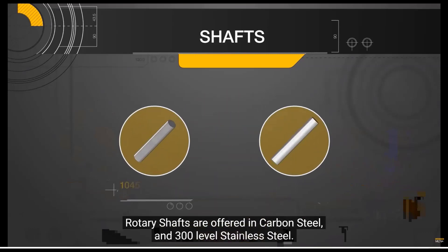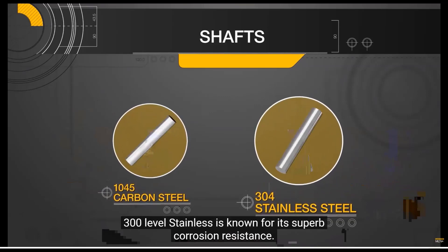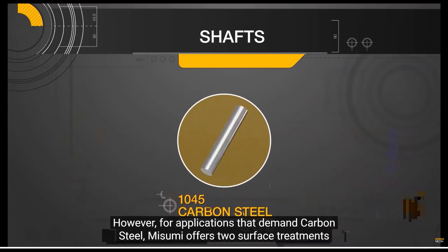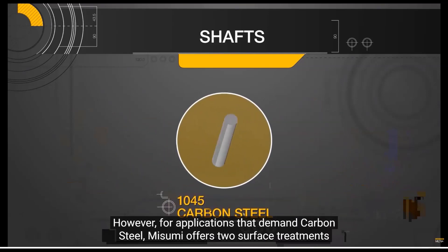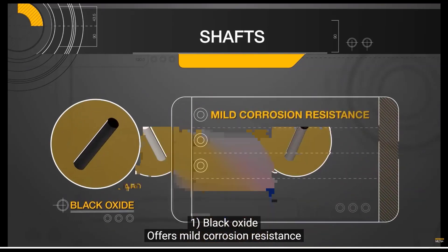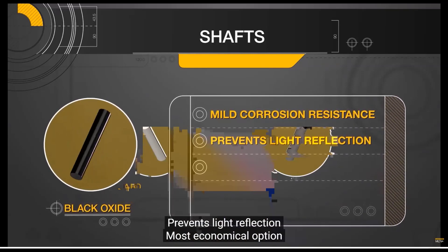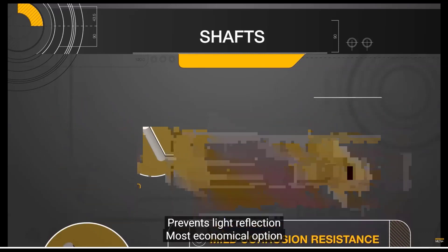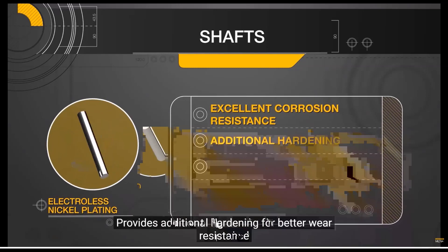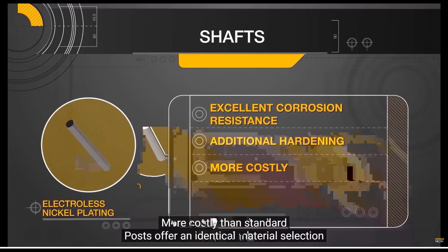Rotary shafts are offered in carbon steel and 300-level stainless steel. 300-level stainless is known for its superb corrosion resistance. For applications that demand carbon steel, Misumi offers two surface treatments: black oxide, which offers mild corrosion resistance and prevents light reflection at the most economical cost, and electroless nickel plating, which offers excellent corrosion resistance and additional hardening for better wear resistance but is more costly.